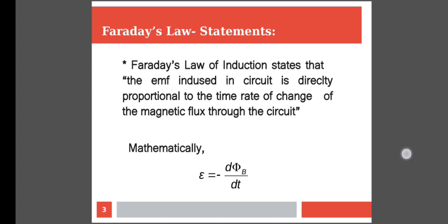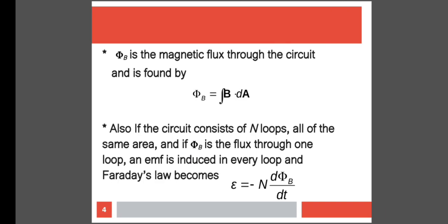Mathematically, we have the expression: epsilon is equal to negative of d phi B by dt, which is nothing but the time rate of change of magnetic flux. Here, magnetic flux is denoted by phi B. You might be wondering why there is a negative sign in the equation. The negative sign indicates the direction of epsilon, which is the electromotive force, and hence the direction of current in the closed loop. To find the magnetic flux, the expression is given by phi B is equal to the integral of B dot dA, where B is the magnetic field and dA is the small area we are considering.